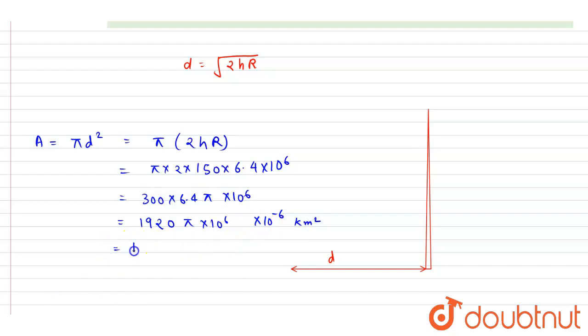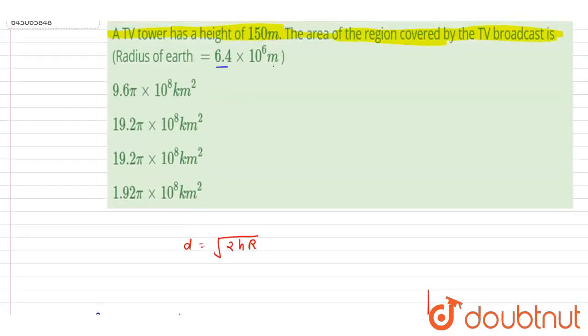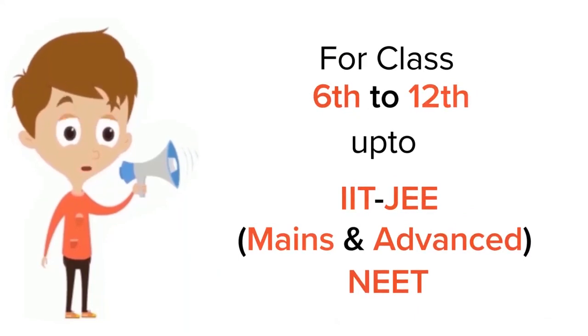So we will get 19.2π kilometer square. Now you can check for the option, so it is 19.2π km², and D will be the correct option. Thank you.